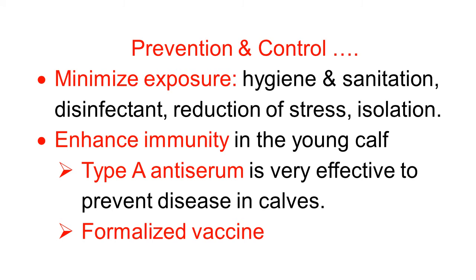Continuing prevention and control. The second principle is to minimize exposure of the infection to the animal through various ways: hygiene and sanitation, disinfection of the premises, reduction of stress, isolation of the infected animal, and proper disposal of infected material. The third principle is enhancement of immunity, especially in young calves. Type A serum provides ready-made antibodies that neutralize the toxin. It is very effective to prevent disease in calves, and immunity can be increased by giving a formalised vaccine if available or required.